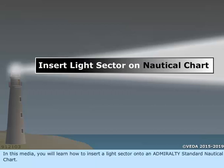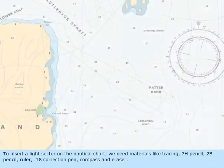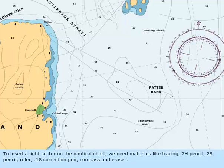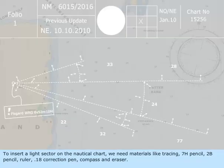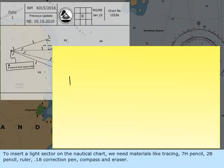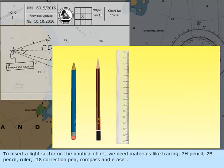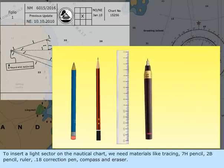In this media, you will learn how to insert a light sector onto an Admiralty Standard nautical chart. To insert a light sector on the nautical chart, we need materials like tracing, 7H pencil, 2B pencil, ruler, 0.18 correction pen, compass, and eraser.